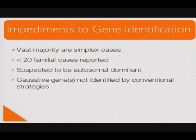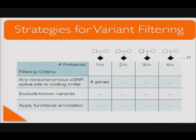I will next talk about how we applied exome sequencing to study 10 individuals with Kabuki syndrome. To apply exome sequencing successfully, we developed several filtering strategies to examine all gene variants discovered in the probands. First, we identified the intersection of any non-synonymous coding single nucleotide polymorphism, splice-site variant, or coding insertion-deletion in successive probands. Next, we excluded known variants present in databases such as dbSNP, the 1000 Genomes Project, or other already-sequenced exomes. Finally, we applied additional filters — usually functional annotation — to reduce the number of genes to analyze.